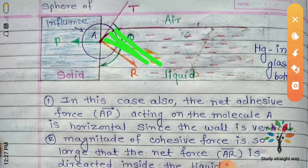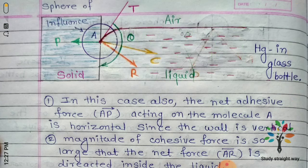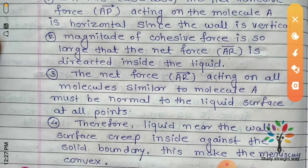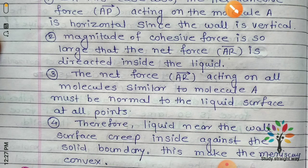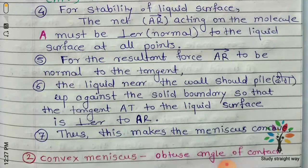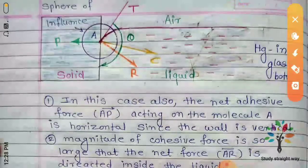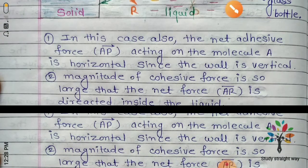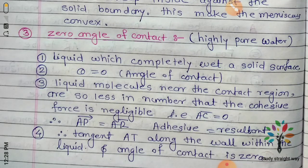The basic difference is the cohesive force: in one case adhesive is large, in the other cohesive is large. Because of this, the liquid near the wall creeps inside against the solid boundary. This makes the meniscus convex. Now the next topic is the angle of contact equal to zero, which means the liquid completely wets the solid surface.